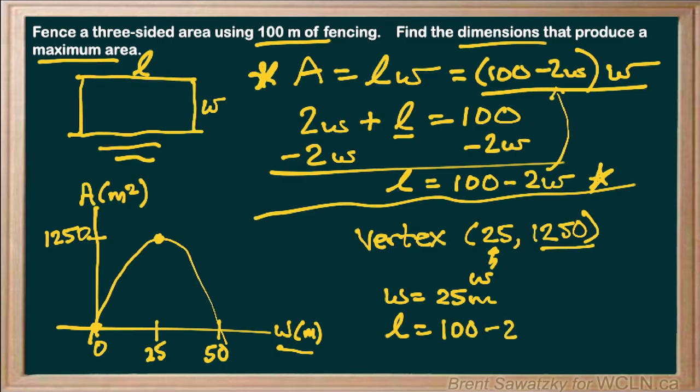And we're interested in the length at the maximum point, and the maximum point when the width was 25. Okay, so the length at that maximum point would be 100 minus 2 times 25, or 100 minus 50 is 50 meters. So our dimensions would be 25 meters as the width and 50 meters as the length. And we're all done.